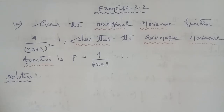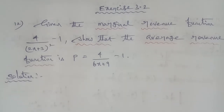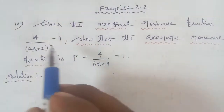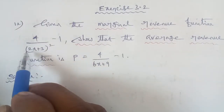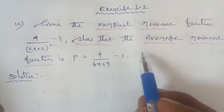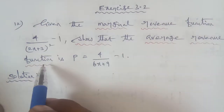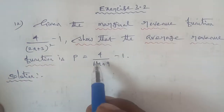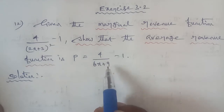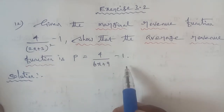Hi students, I am Gopinath. 12th Business Maths, Exercise 3.2, question number 12. Given the marginal revenue function 4 divided by (2x plus 3) squared, minus 1, show that the average revenue function is p equals 4 by (6x plus 9) minus 1.